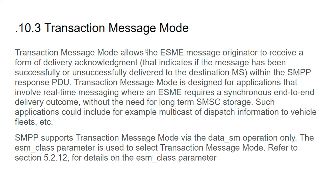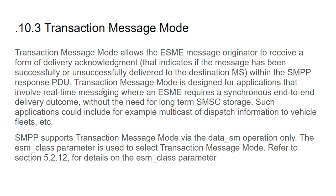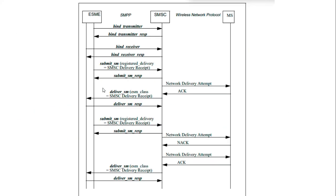Transaction message mode works end-to-end. The ESME is bound as a transmitter and sends a data SM. Before sending the response back to the ESME, the SMSC will attempt delivery to the mobile station. The message is never stored in the SMSC. Once the SMSC receives the data SM, it immediately tries to deliver to the mobile station, and once it receives the acknowledgement, it sends back the data SM response to the ESME.